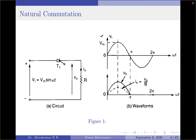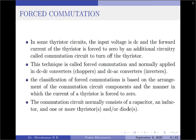This is the introduction to natural commutation. When it comes to forced commutation, in some thyristor circuits the input voltage is DC and the forward current of the thyristor is forced to zero by additional circuitry called the commutation circuit to turn off the thyristor. This technique is called forced commutation and is normally applied in DC to DC converters and DC to AC converters. Note that in these converters the input supply is DC and since DC does not have a natural zero crossing, this type of commutation is named forced commutation.